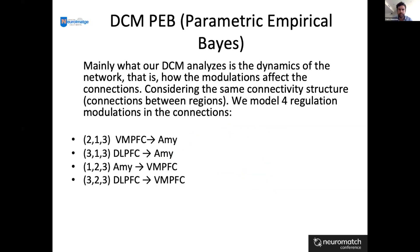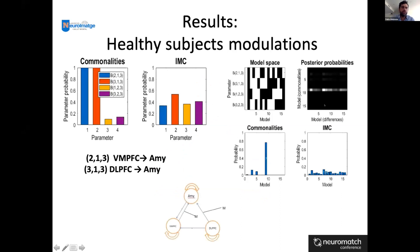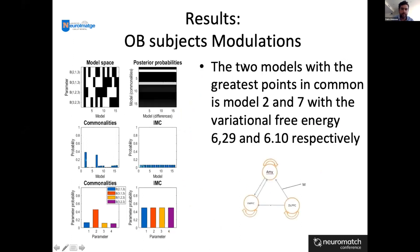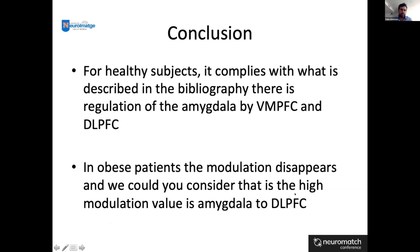In the healthy controls, the results match the model proposed in the literature: the dorsolateral frontal cortex and the ventromedial frontal cortex both regulate amygdala activity through modulation. However, in patients with obesity, this modulation is not observed in the same way — only the modulation from the amygdala to the dorsolateral frontal cortex is seen. So healthy subjects show the expected top-down regulation of the amygdala by prefrontal areas, but this is disrupted in patients with obesity.